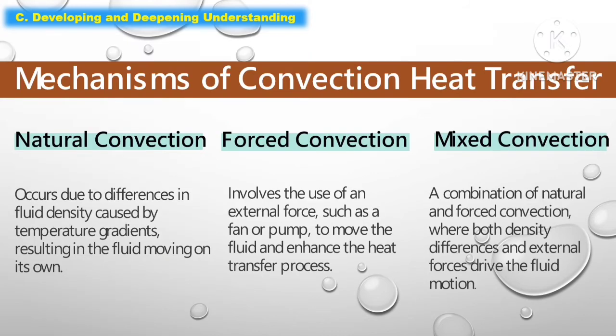The following are the mechanisms of convection heat transfer. The first is natural convection, which occurs due to differences in fluid density caused by temperature gradients, resulting in the fluid moving on its own. The second is forced convection, which involves the use of an external force, such as a fan or pump, to move the fluid and enhance the heat transfer process. The third is mixed convection — a combination of natural and forced convection, where both density differences and external forces drive fluid motion.